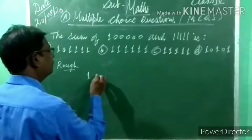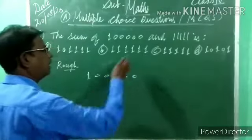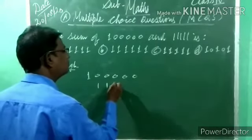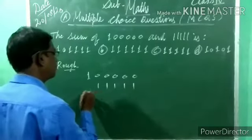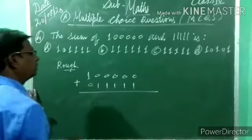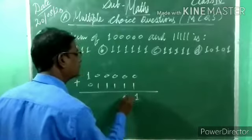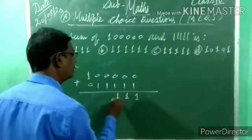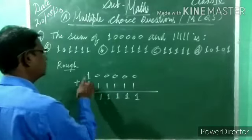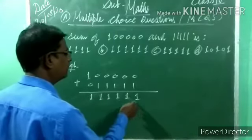Do plus: one lakh has five zeros (1,00,000). Eleven thousand one hundred eleven is 11,111. Sum means plus; empty places get zero. Zero plus one is one; zero plus one is one; zero plus one is one; zero plus one is one; zero plus one is one; one plus zero is one. Answer: one lakh eleven thousand one hundred eleven (1,11,111).